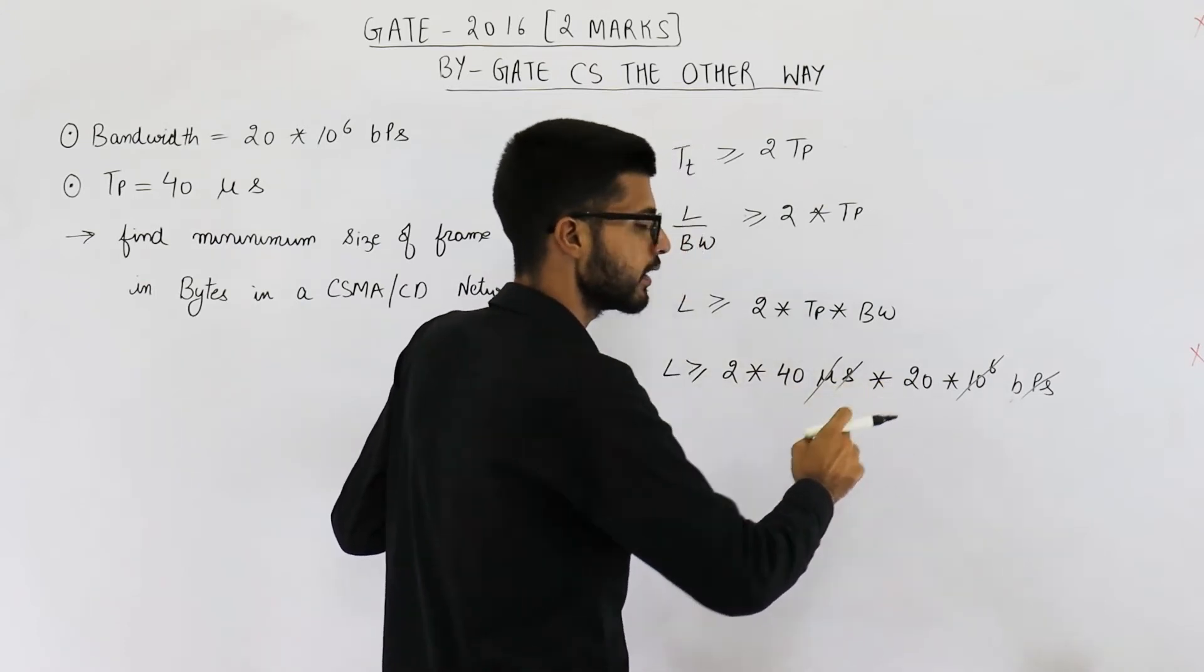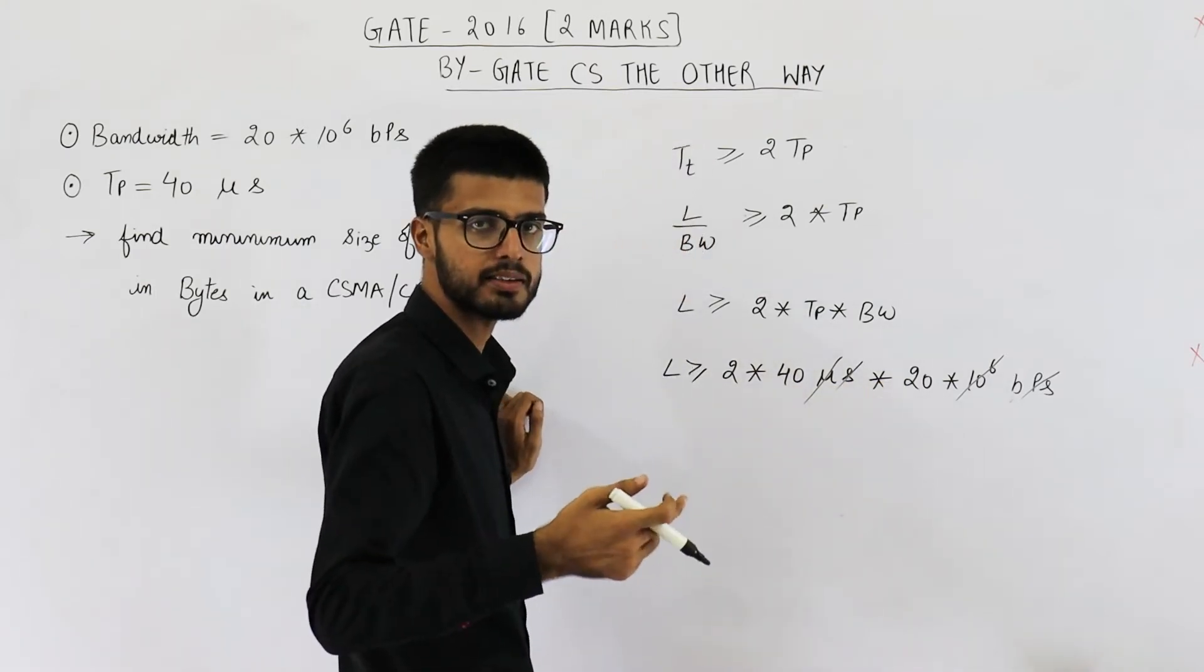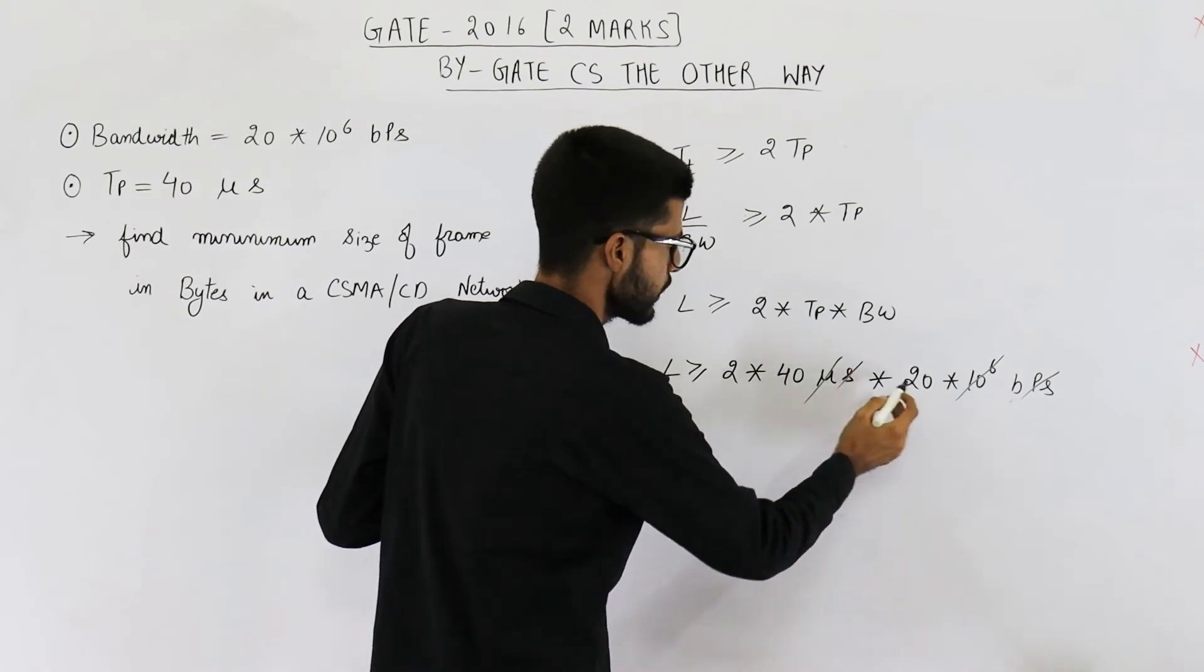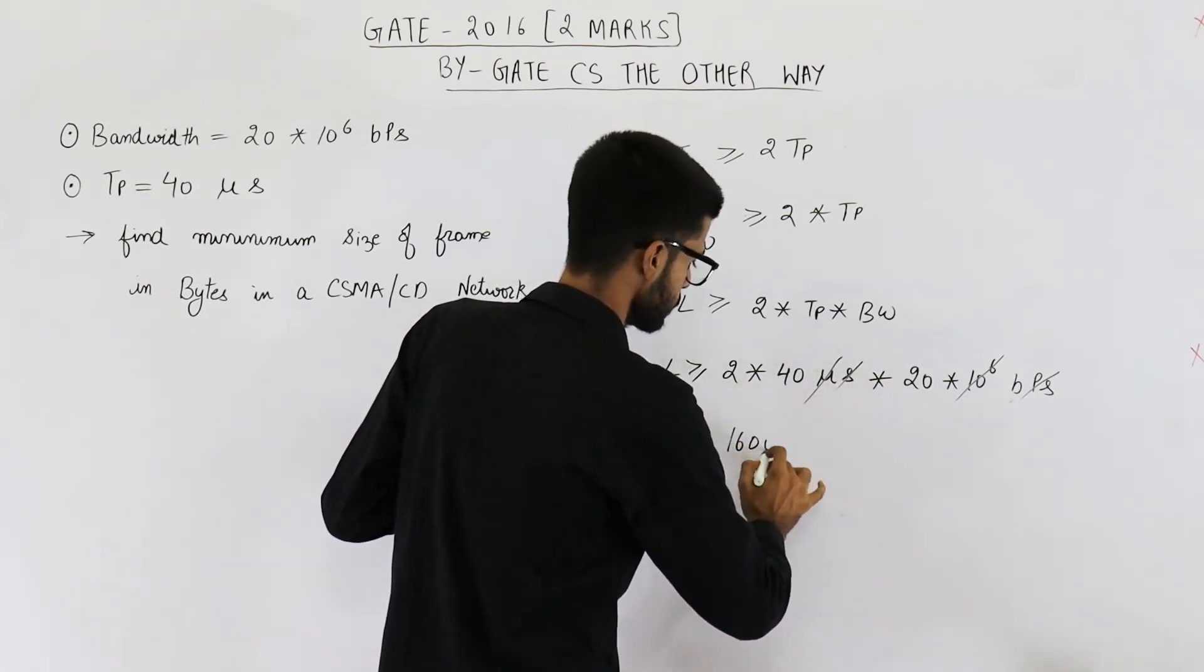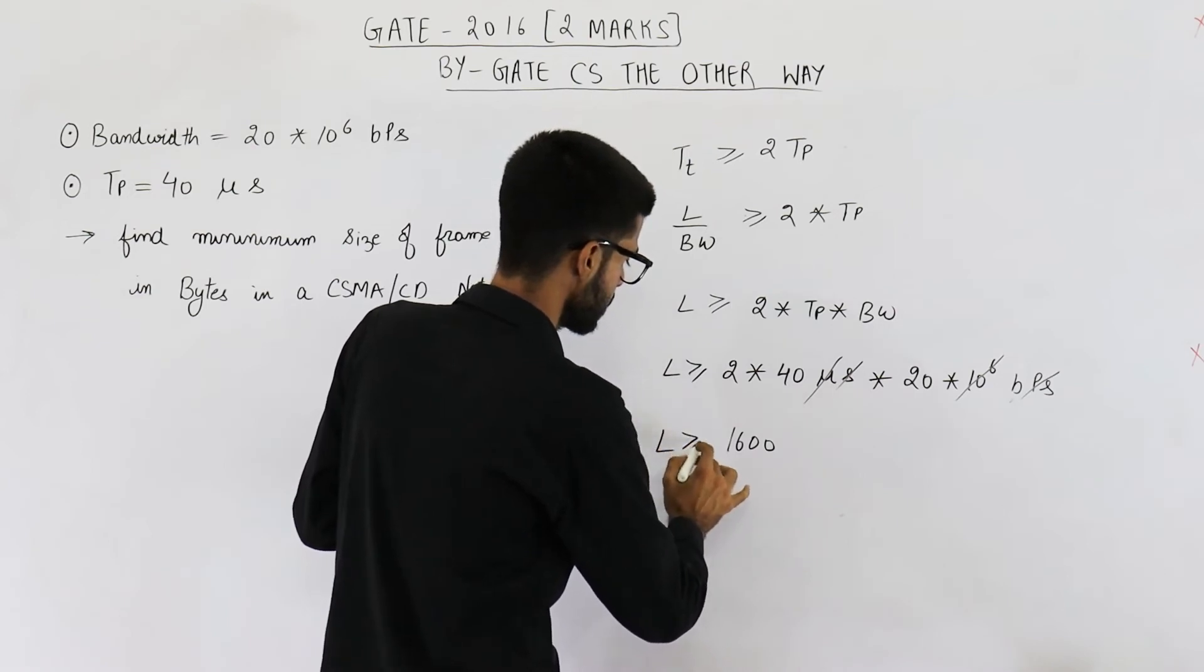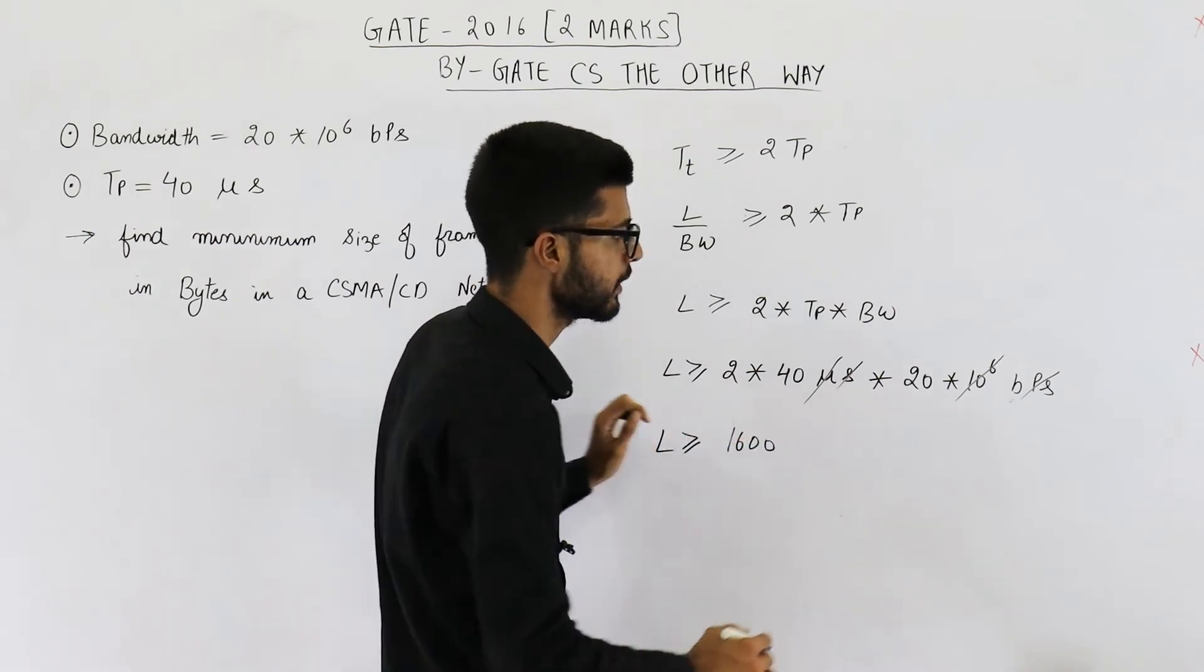Now this is 4 times 2 which is 8. 8 times 20 is 160. See, 4 2's are 8, 8 2's are 16, followed by 2 zeros. So L is greater than or equal to these many bits.